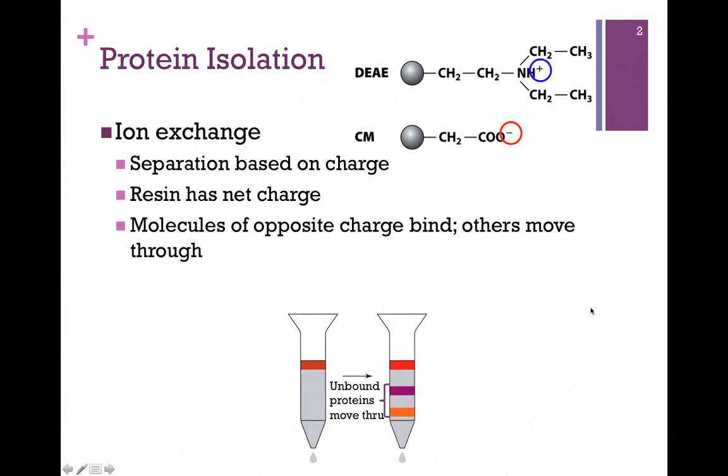Which type of resin will be used will depend on the conditions and the protein that we're trying to isolate. In this case, molecules of opposite charge will bind to the column, whereas others will move through. Anything that has either the same charge or no net charge will not bind to the column.